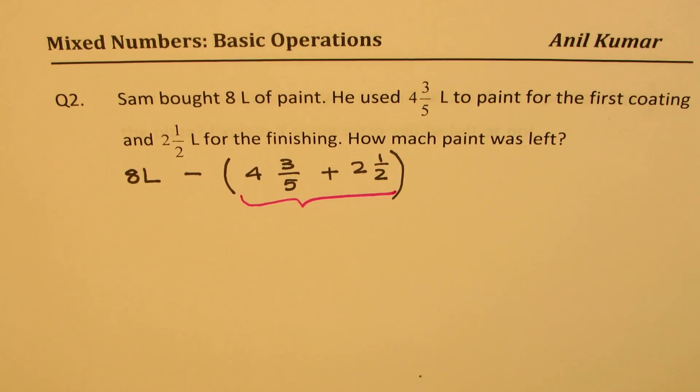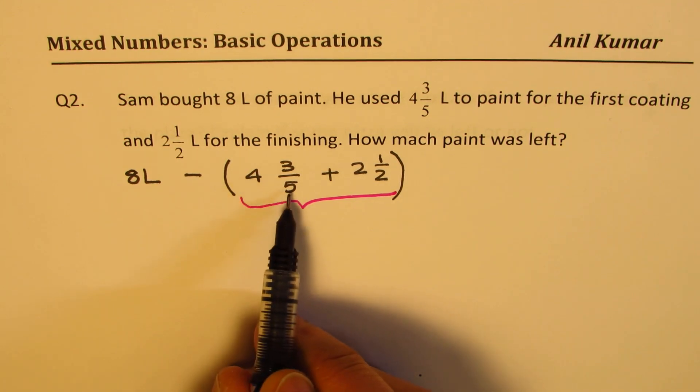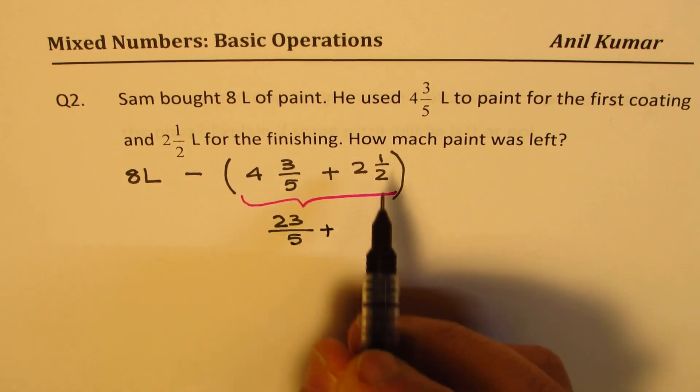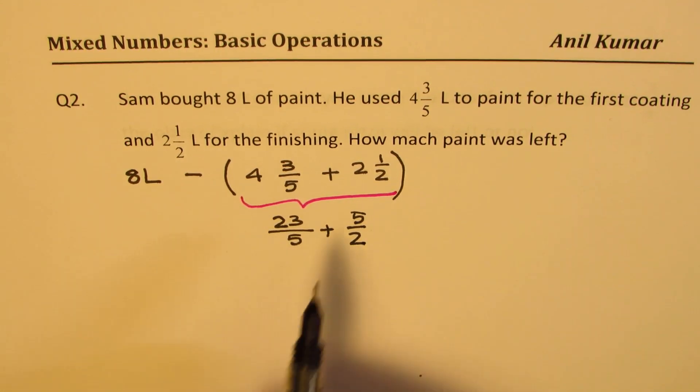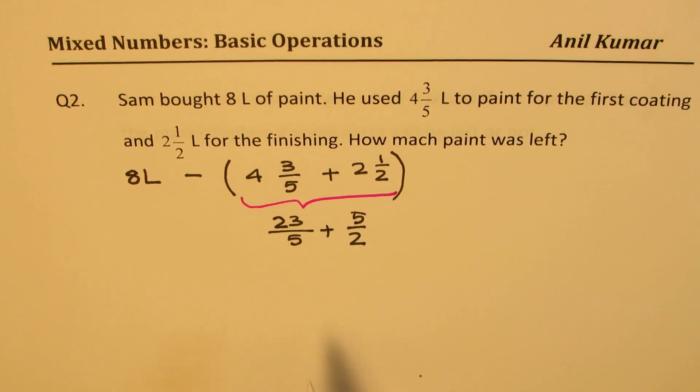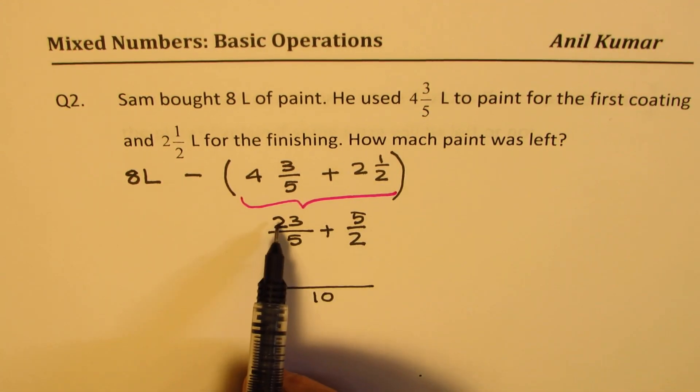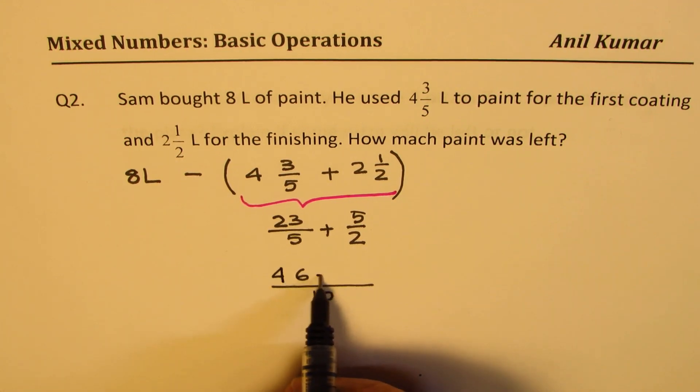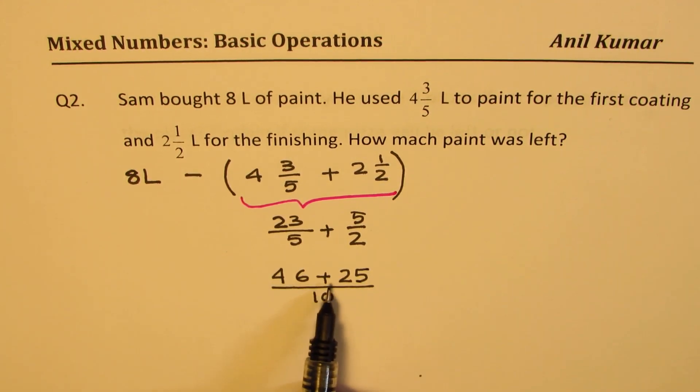So in first part, let's do this addition. How to add? Just as we did in our first question. First step will be to write them as improper fractions. 4 times 5 is 20 plus 3 is 23, so you get 23 over 5 plus 2 and a half: 2 times 2 is 4, 4 plus 1 is 5, so 5 over 2. Now, we have to write this with common denominator. You could make 10 as your common denominator, 5 times 2.